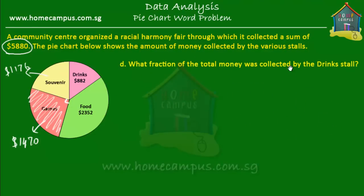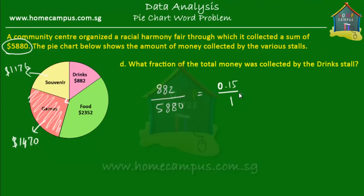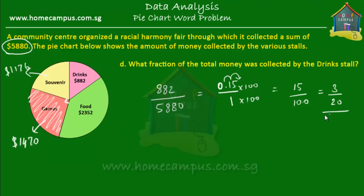The next question is: what fraction of the total money was collected by the drink stall? The drink stall collected $882 and the total collection was $5,880. So the fraction is 882 divided by 5,880, which equals 0.15. We convert this decimal fraction to whole numbers by multiplying both by 100, giving us 15 over 100. We simplify by dividing each by 5: 15 ÷ 5 = 3 and 100 ÷ 5 = 20. So the fraction is 3 over 20.